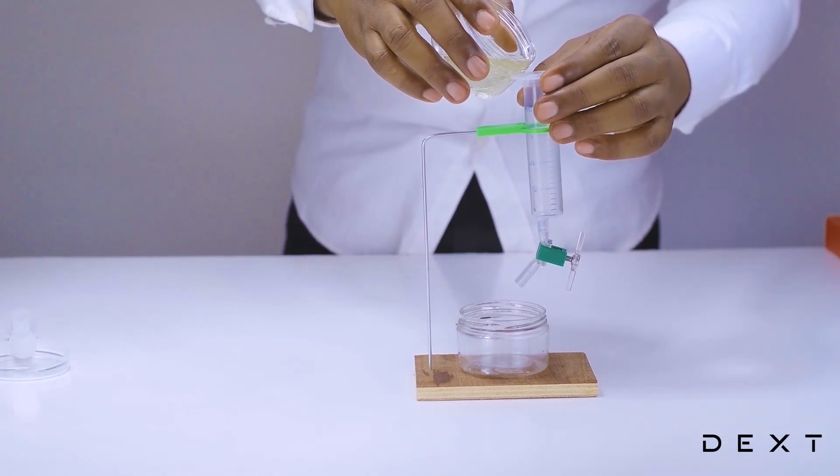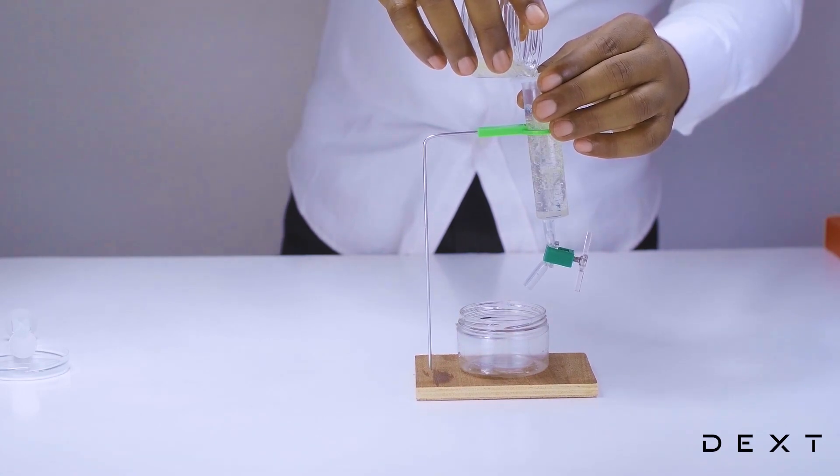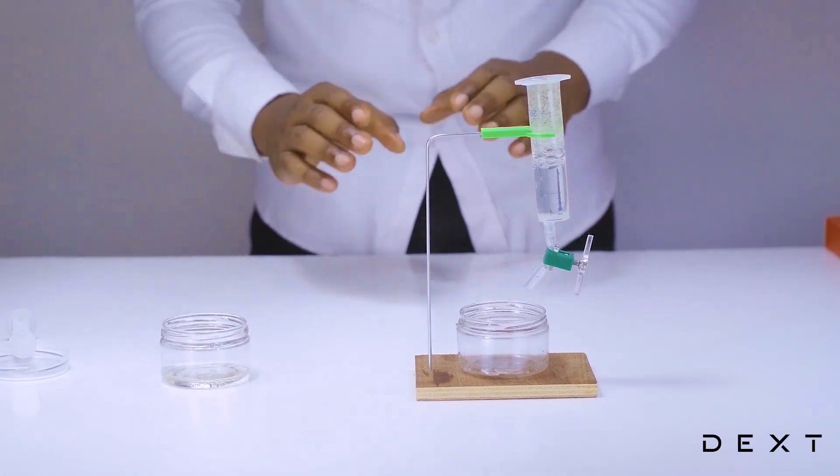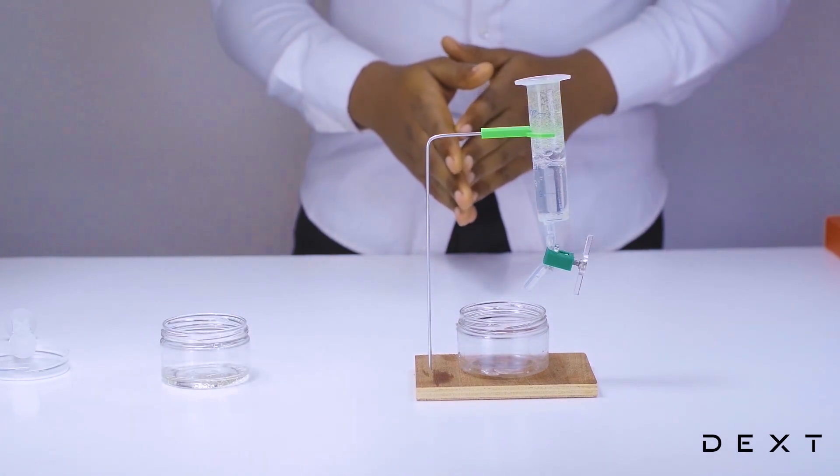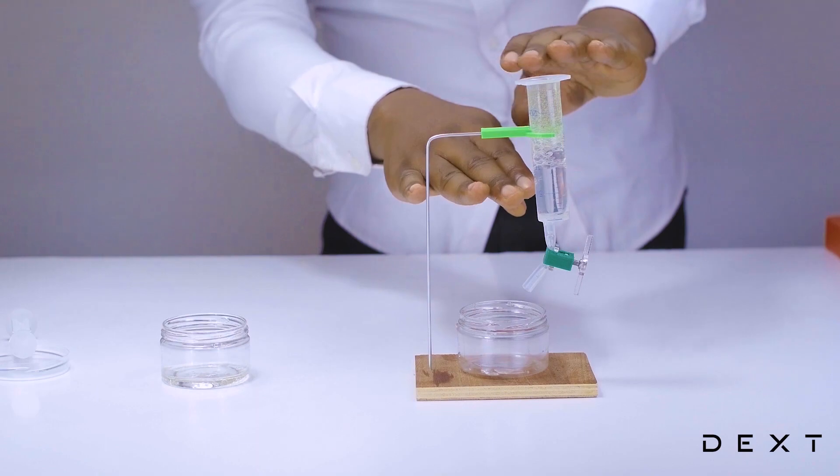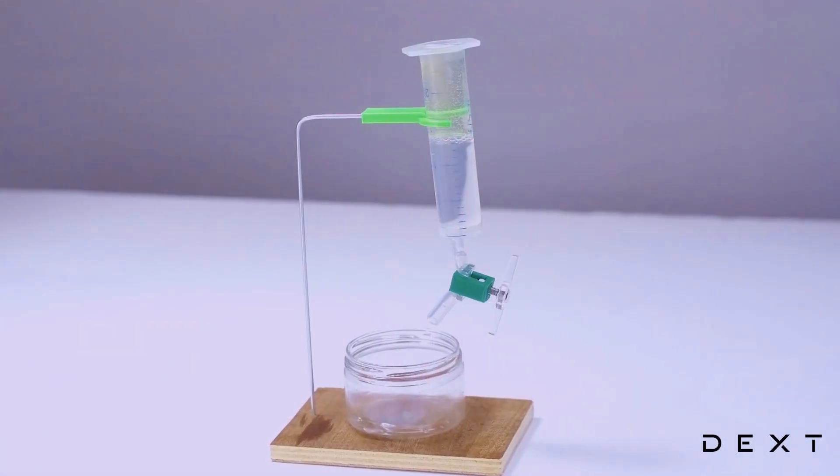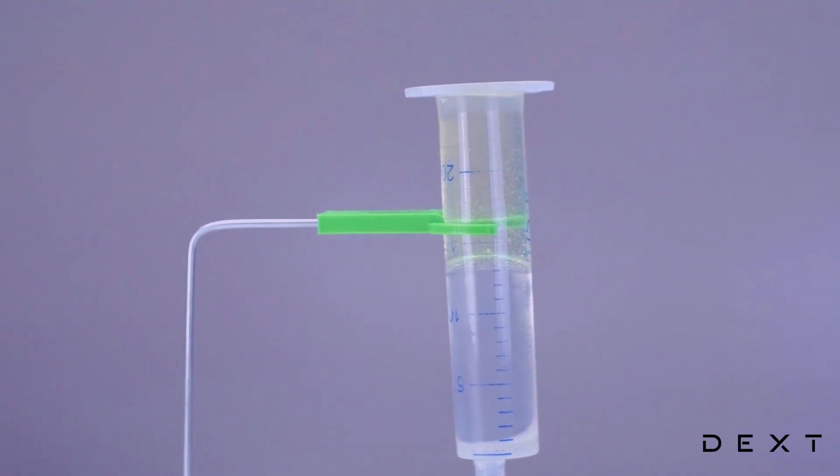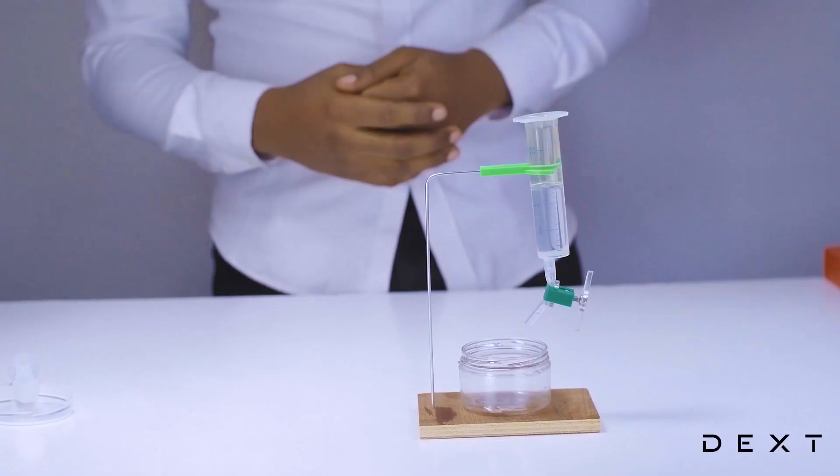Now let's pour that gently into our separating funnel. As you can already see, the mixture has begun to separate. You have the water down there and then the oil on top. You leave this for about 15 minutes so you get a nice separation.